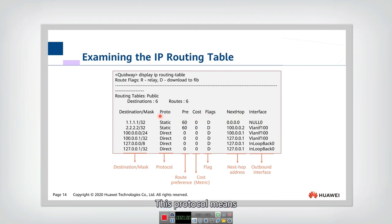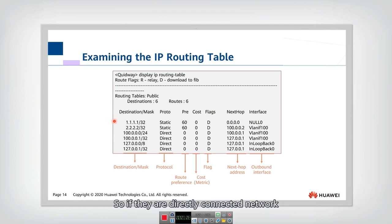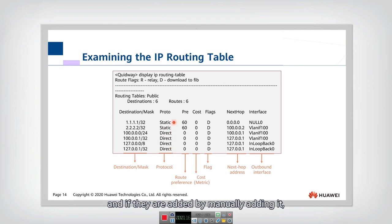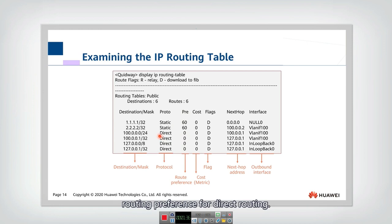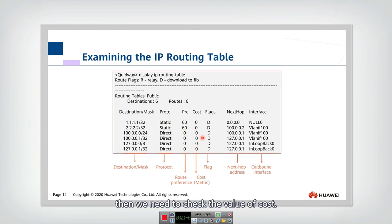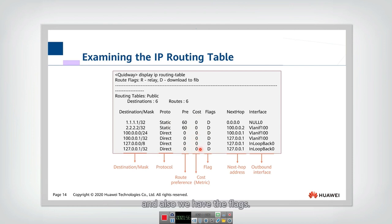Now let's look at these fields. The protocol field indicates through which protocol this entry was generated. If it is a directly connected network, the entry is added through direct routing. If it is added manually, that is a static routing entry. The route preference field works such that the lower the value, the higher the preference. Zero is the default preference for direct routing and 60 is the default for dynamic routing. If preference is the same, then we check the cost value, selecting the lower cost to forward the packet. We also have flags.